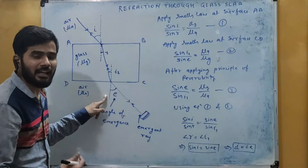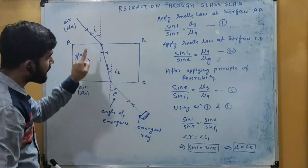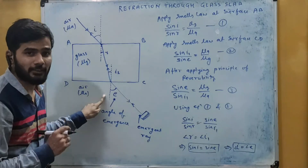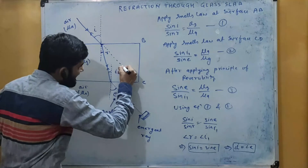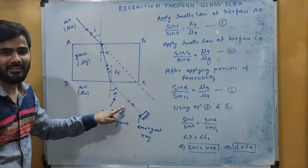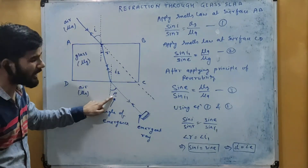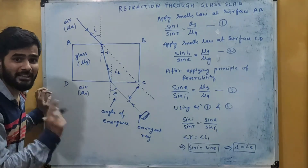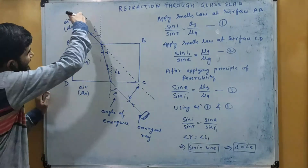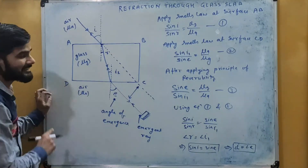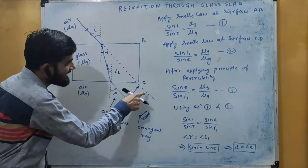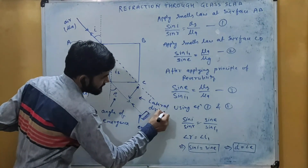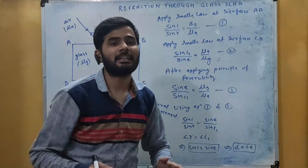Since angle i equals angle e, the angle at which the light ray is incident is the same as the angle at which the emergent ray exits. This means these two light rays are parallel to each other. If we extend the incident ray forward, you will see both rays are parallel. However, they are displaced from each other because of the glass slab. If the glass slab were not there, the light ray would go straight with no deviation, but because of the glass slab there is a deviation between the emergent ray and the extended incident ray. The distance between them is called the lateral displacement.